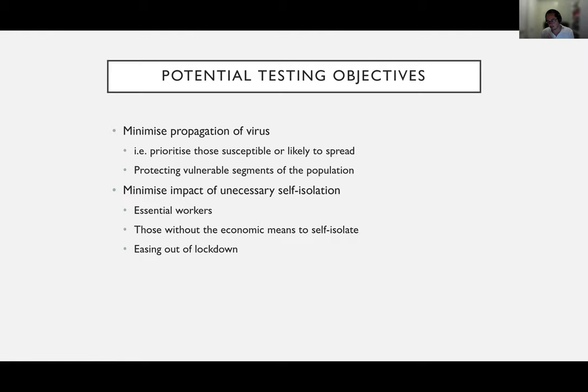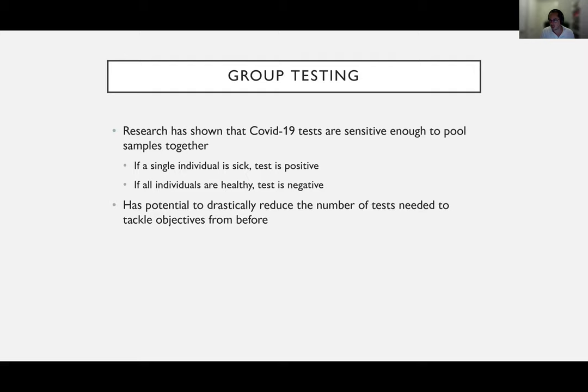Part of this resource allocation is also minimizing the impact of quarantine when there are blunt policies to keep the virus at bay. Certain characteristics are important to take into account, such as whether an individual is an essential worker — these individuals might have a higher priority to not be self-isolating unnecessarily. Individuals without the economic means to self-isolate may not even be able to self-isolate, something we've seen in the Global South in particular. Testing in this scenario is a means of easing out of lockdown.